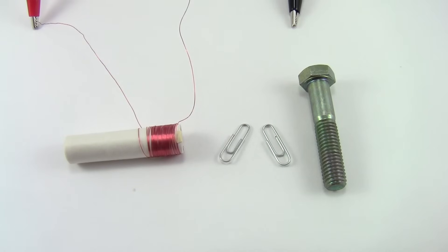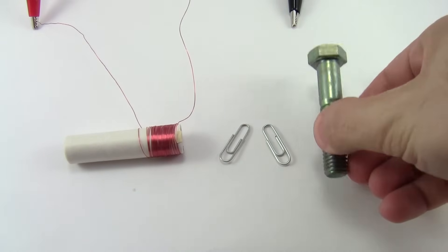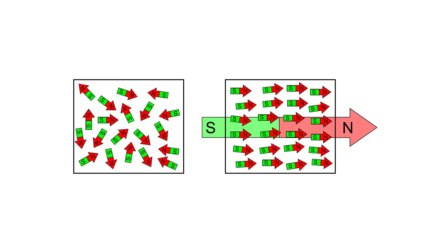To make an electromagnet really strong, you need to add a ferromagnetic core like this iron bolt. Ferromagnetic materials have many smaller, individual magnetic domains. Normally, these domains are aligned randomly and cancel each other out.